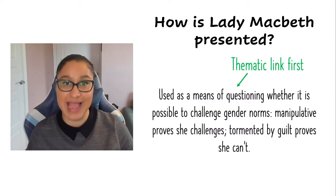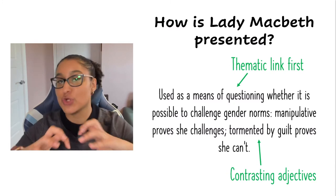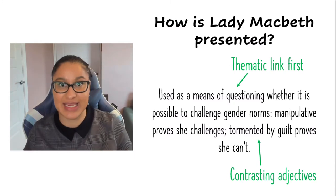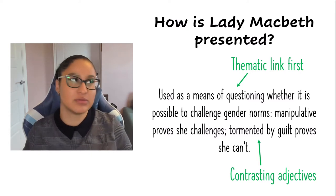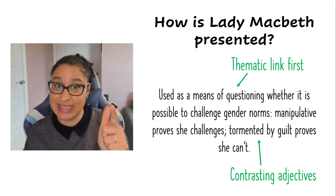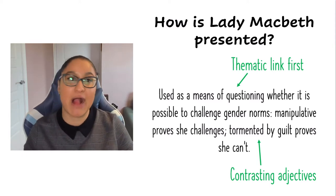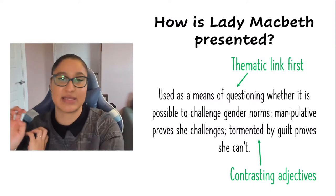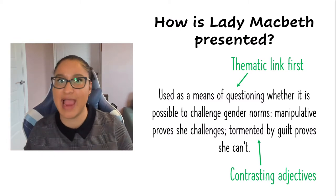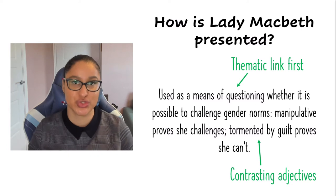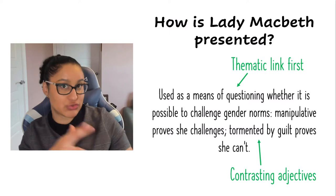When looking at how the character is presented, you want to try to have contrasting ideas so that you're able to look at the complexity. That is 100% possible with the characters of Macbeth and Lady Macbeth for sure — you can look at how they are like this in the beginning but then really different by the end or the middle. They have a lot of character development, so make sure when you're having your ideas of how they're presented, you're looking at that contrast.